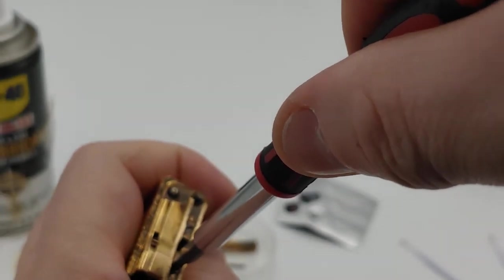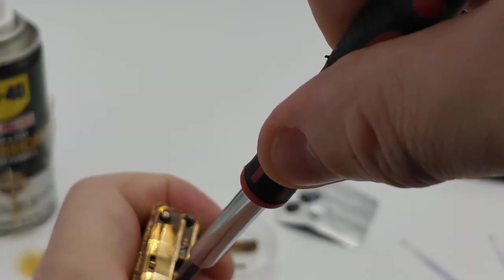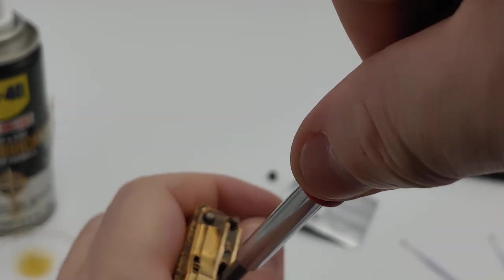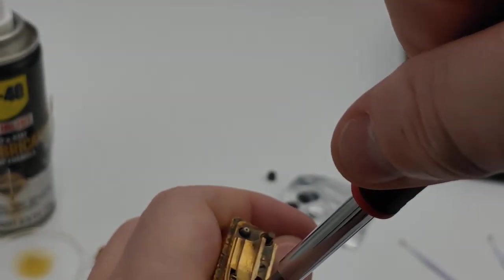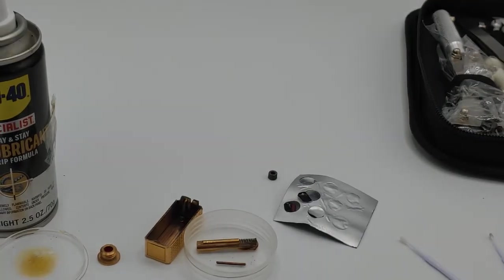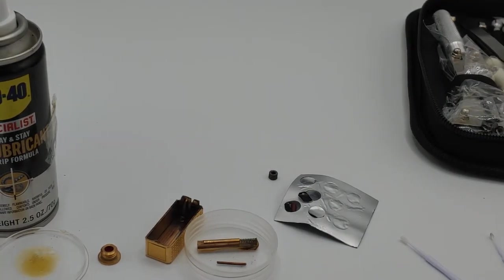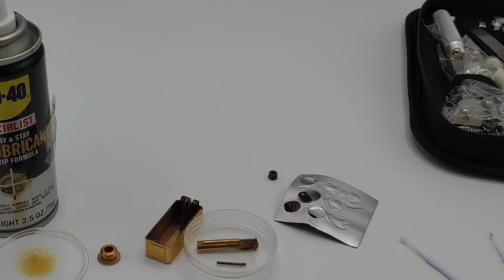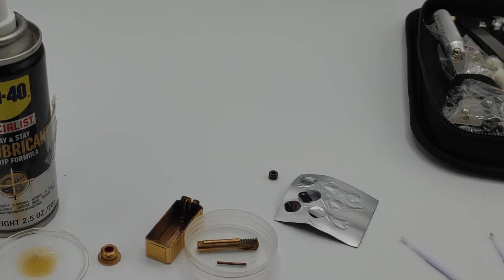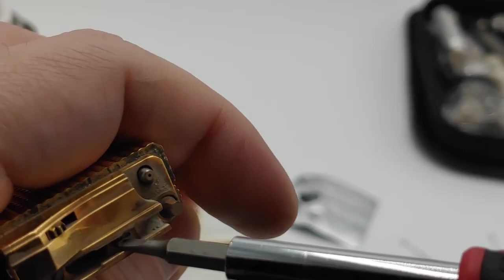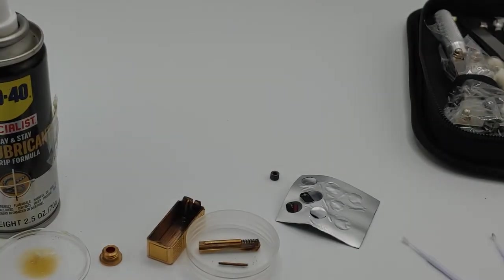And I recommend you get a screwdriver that's the correct size. Let's see how easy these come out. Wow, that's pretty stuck. Sorry guys, I can't do this on camera. I'm literally pushing down so that I get good contact with the screw. Because otherwise I'll strip it. But I don't know if you guys can see. Well, I'll just get this unscrewed off camera.